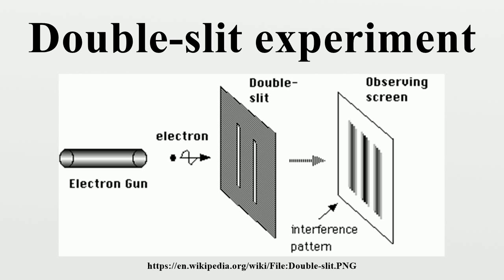An important version of this experiment involves sending single particles through a double-slit apparatus one at a time, resulting in single particles appearing on the screen as expected. Remarkably, however, an interference pattern emerges when these particles are allowed to build up one by one. This demonstrates wave-particle duality, which states that all matter exhibits both wave and particle properties. The particle is measured as a single pulse at a single position, while the wave describes the probability of absorbing the particle at a specific place on the detector.